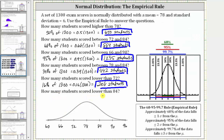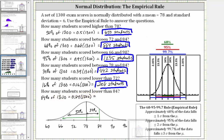For the last question, how many students scored below 84? Notice 84 is one standard deviation above the mean. We know 78 is the mean, so 50% of students scored less than 78. The percent between the mean and one standard deviation above the mean — between 78 and 84 — is 34%. Therefore, the percent scoring less than 84 is 50% plus 34%, or 84%, giving us 0.84 times 1,300, which is 1,092 students.